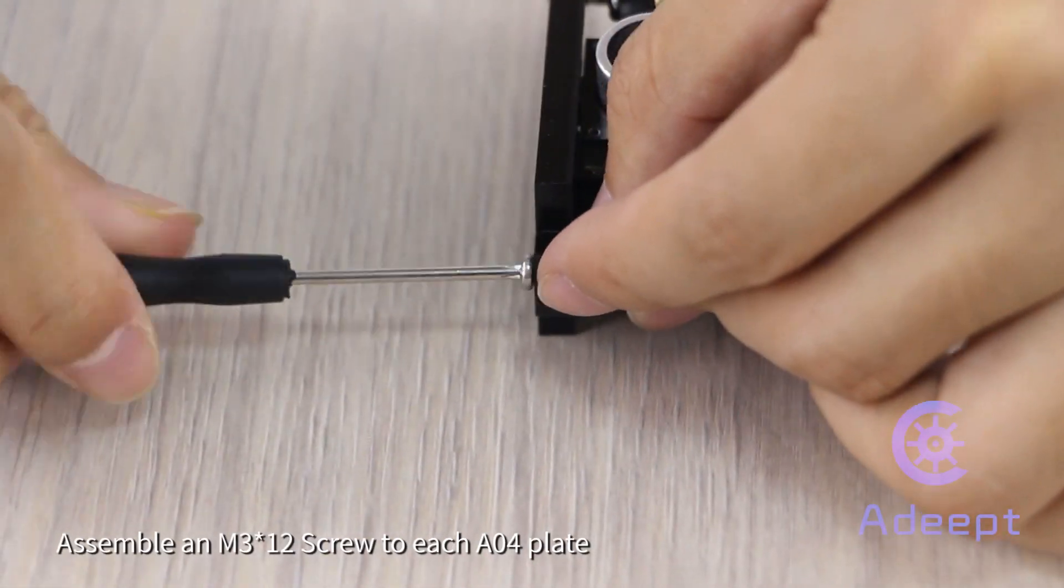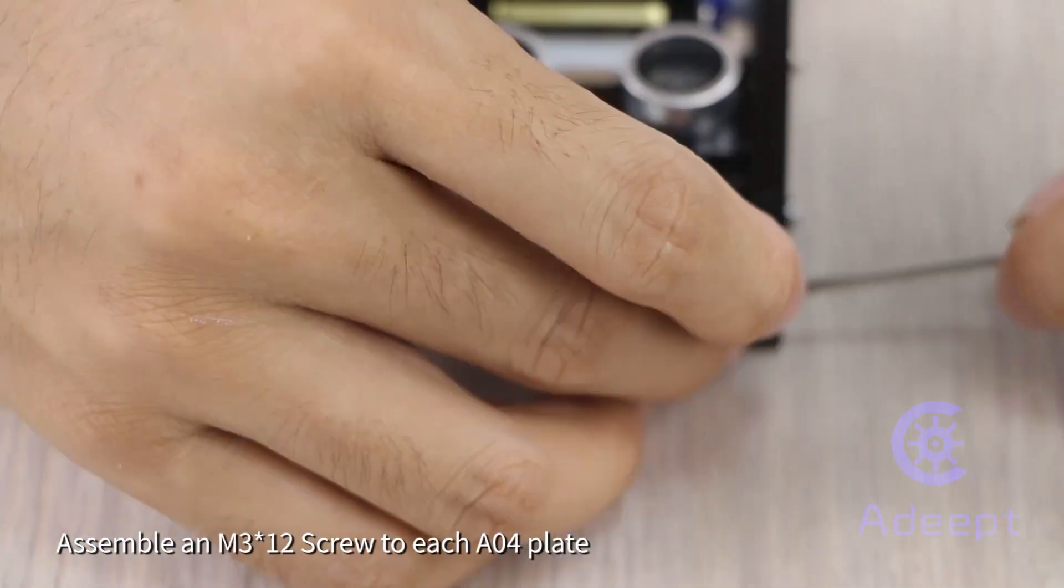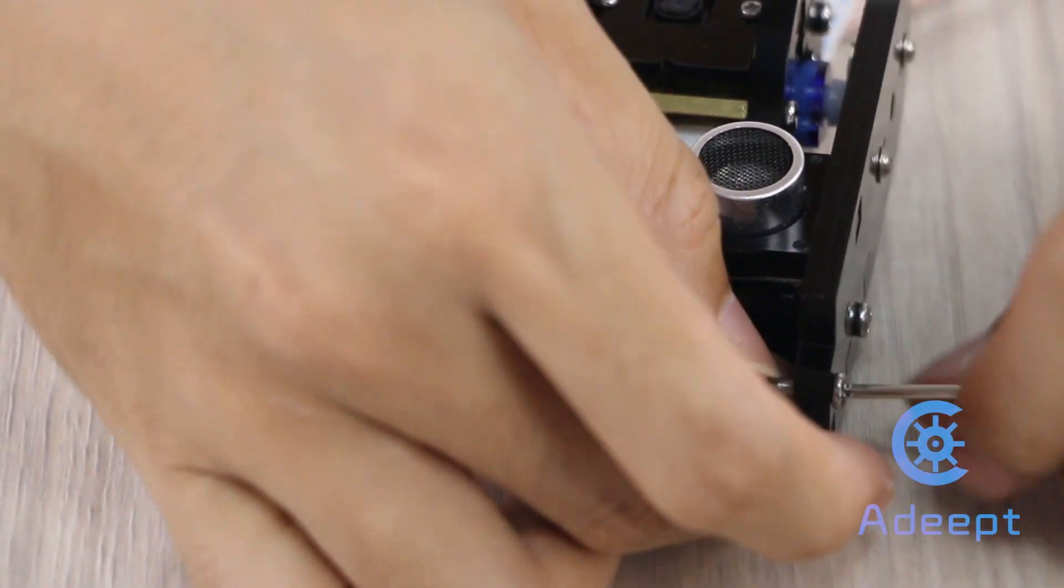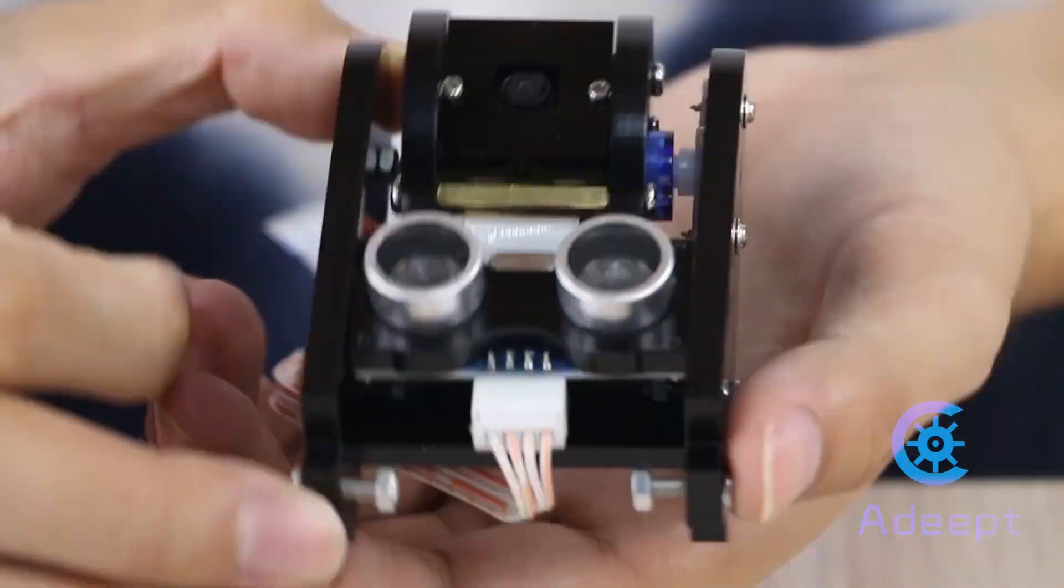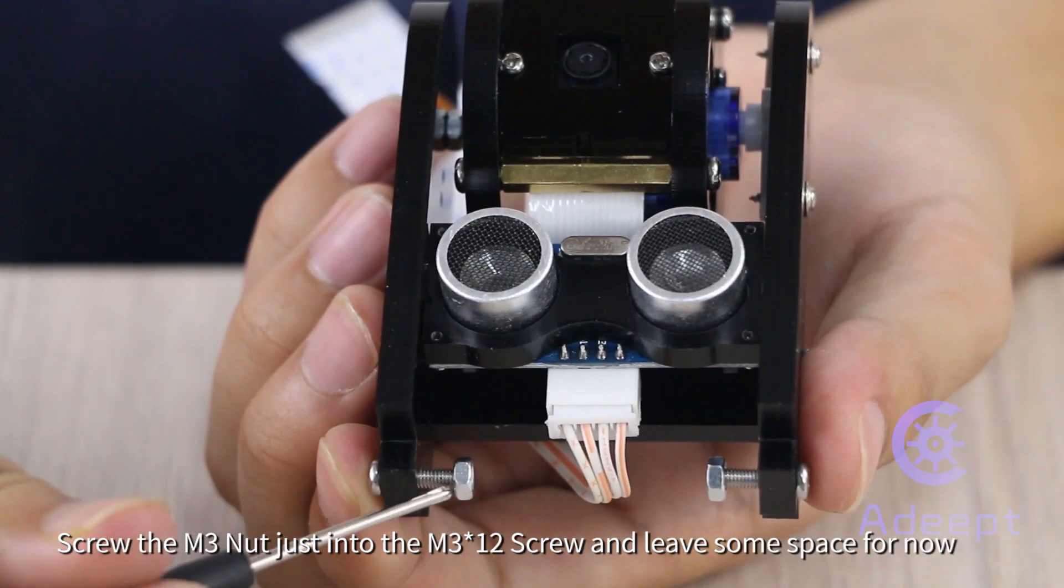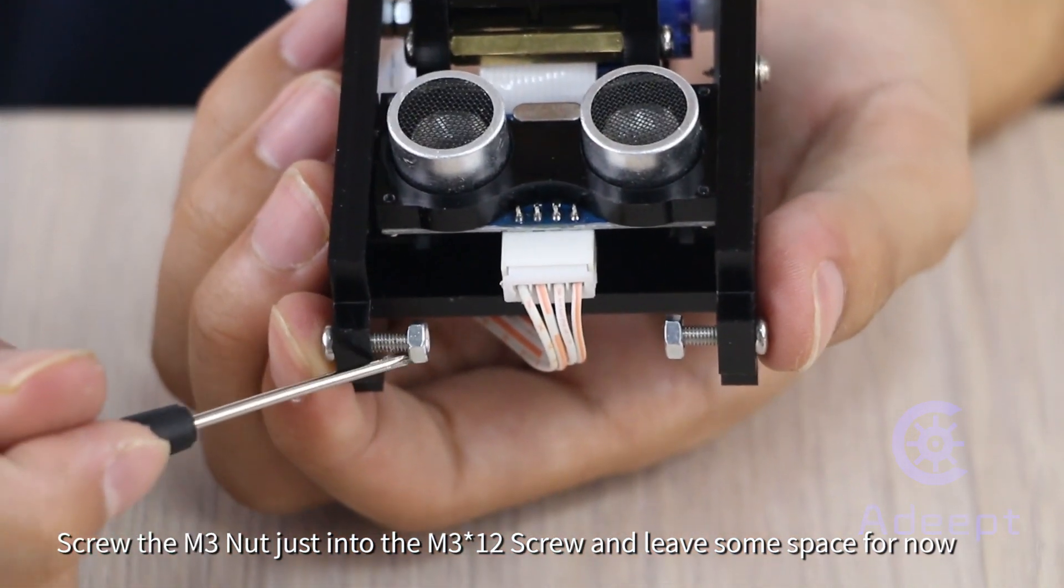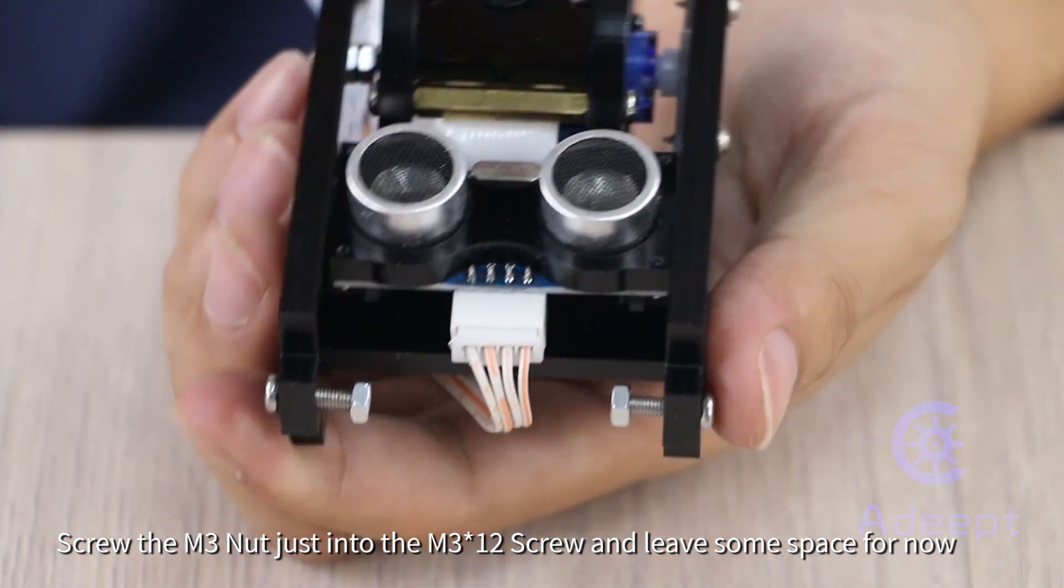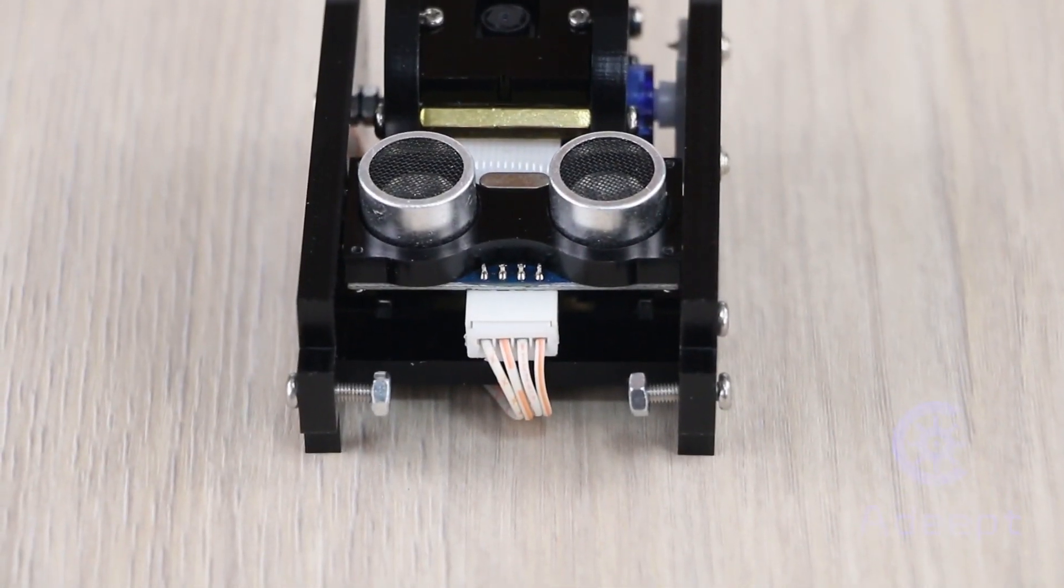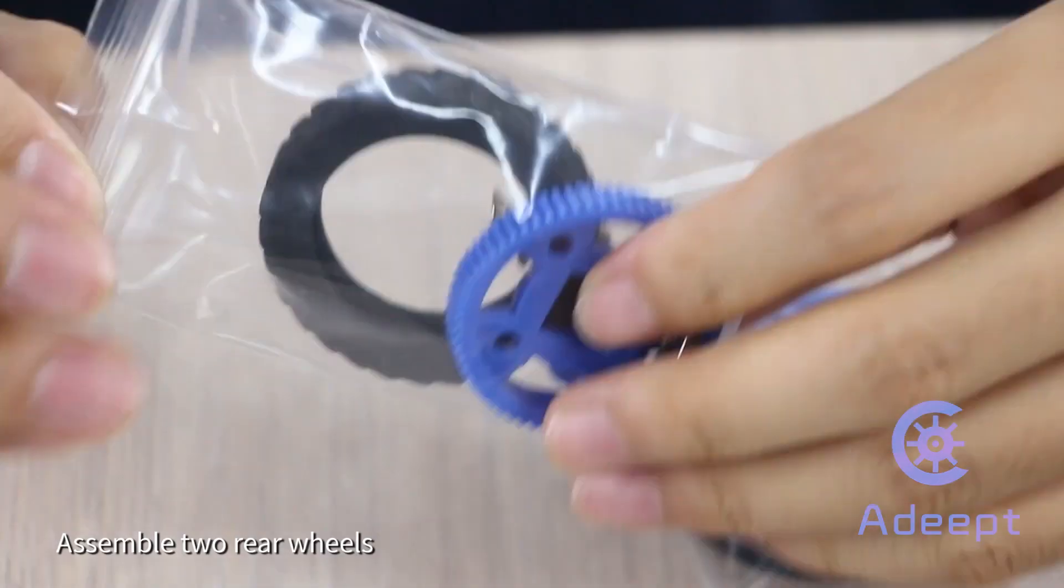Assemble an M3 by 12 screw to each A04 plate. Screw the M3 nut just into the M3 by 12 screw and leave some space for now. Assemble two rear wheels.